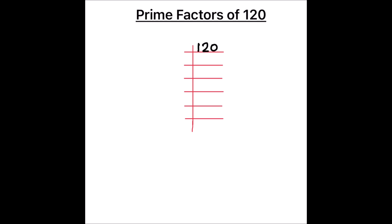As 120 is an even number, it is easily divisible by number 2. 2 times 6 is 12 and 2 times 0 is 0. Again we can divide by 2. 2 times 3 is 6, 2 times 0 is 0.